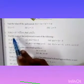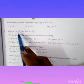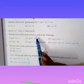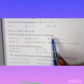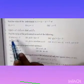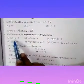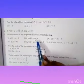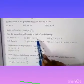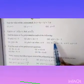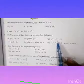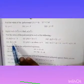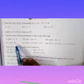Third problem: find the zeros of the polynomial in each of the following. First problem: p of x equals x minus 3. Second problem: p of x equals 2x plus 5. Third problem: q of y equals 2y minus 3.